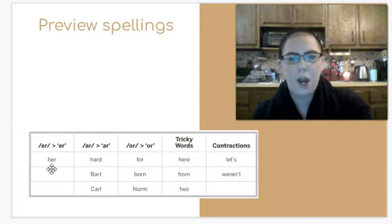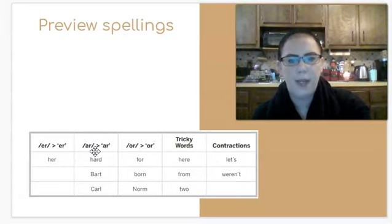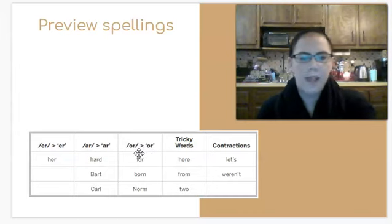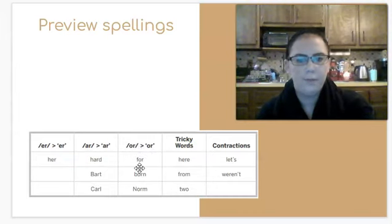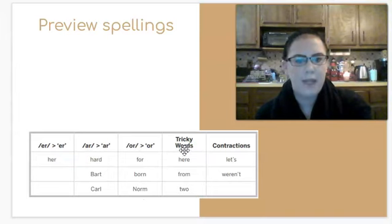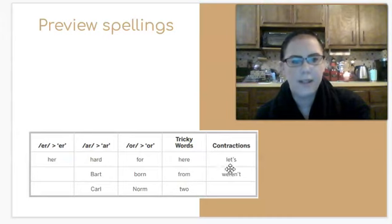A word with the er sound — repeat after me: per. The ar sound — repeat after me: hard, Bart, Carl. The or sound — repeat after me: for, born, Norm. Tricky words — repeat after me: hear, from, to. And some contractions: left, weren't.